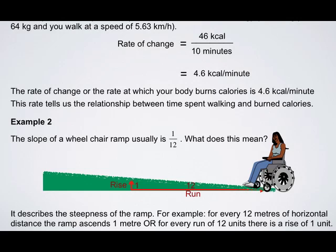For example, if you were to have a 12 meter horizontal distance, the ramp descends 1 meter. Or, for every run of 12 units, there's a rise of 1 unit.